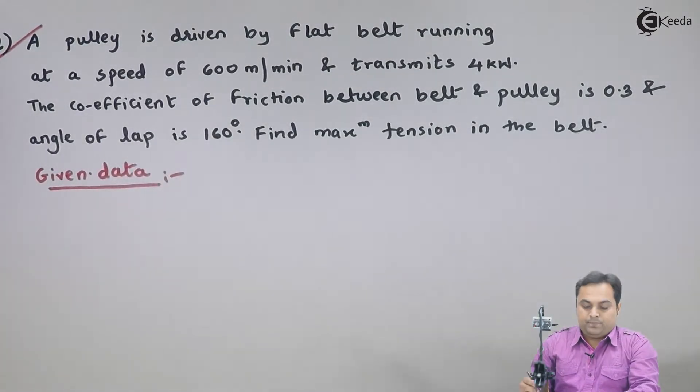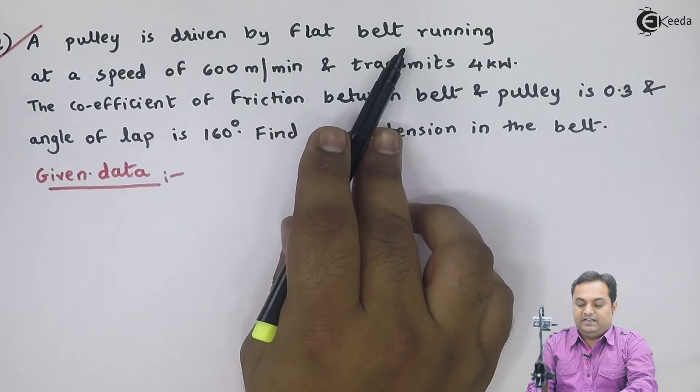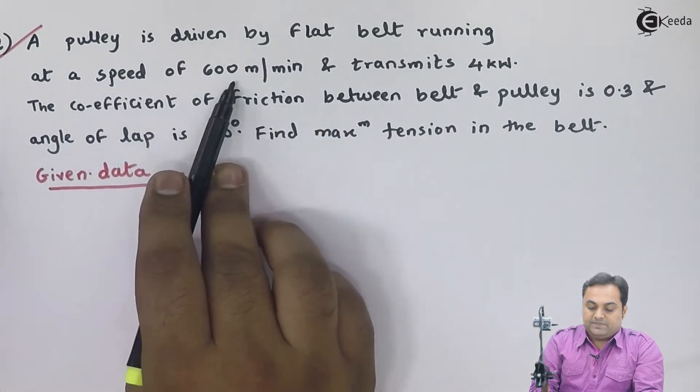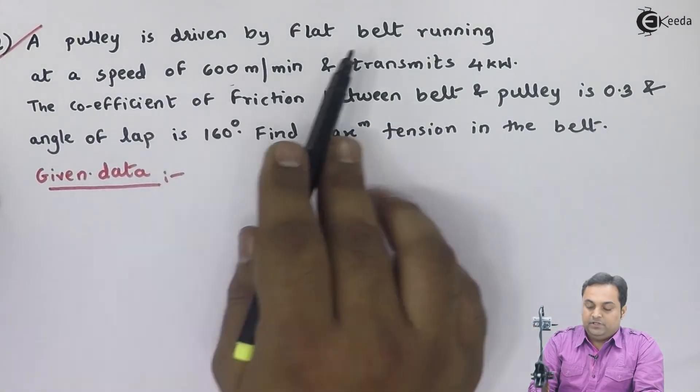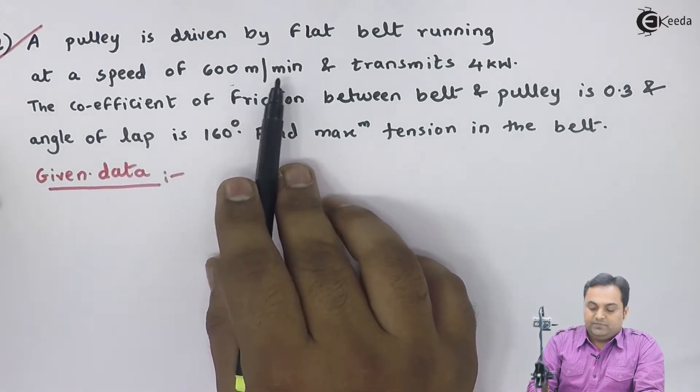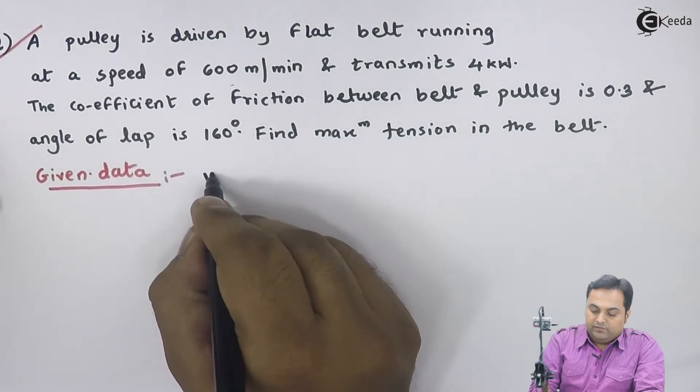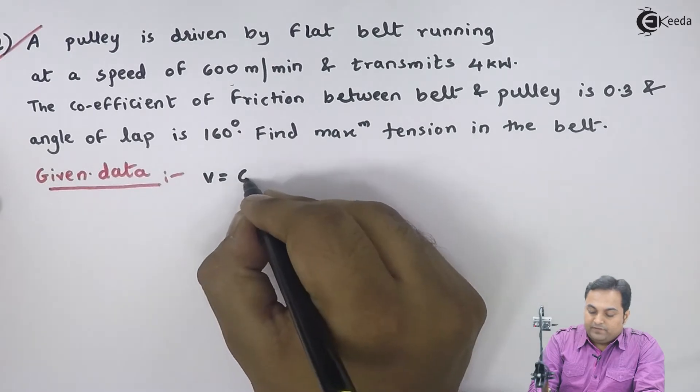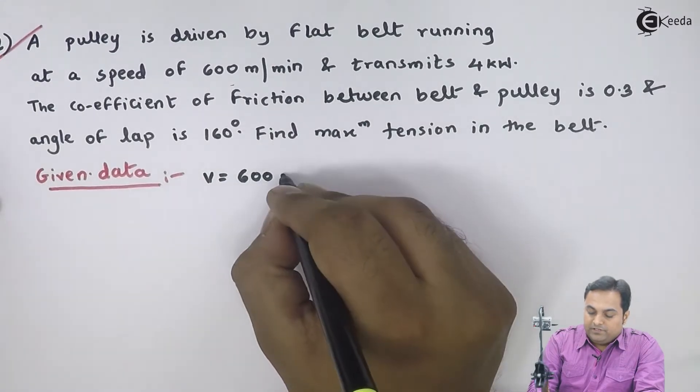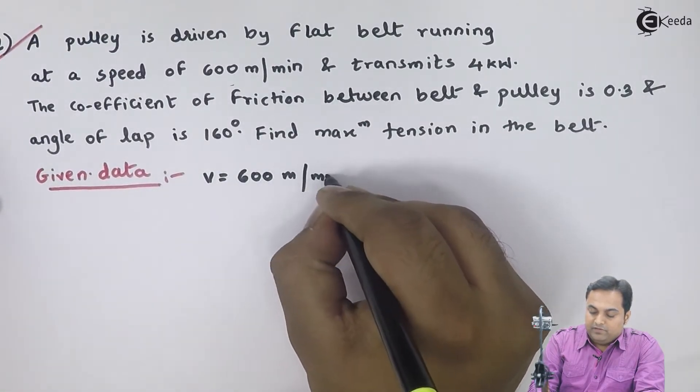It is given a pulley is driven by flat belt running at a speed of 600 meters per minute. The speed of the flat belt is given in terms of velocity. Your velocity is 600 meters per minute, so we will convert this.